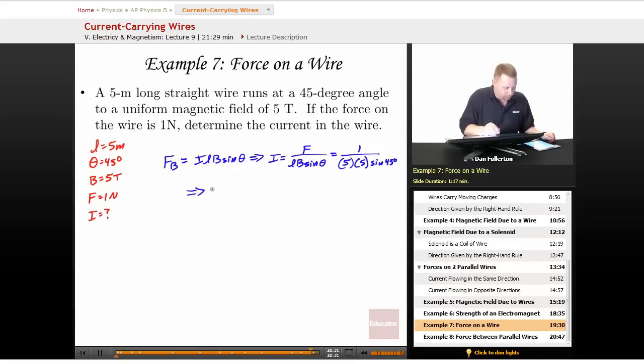Therefore, our current is about 0.0566 amps, or 56.6 milliamps.